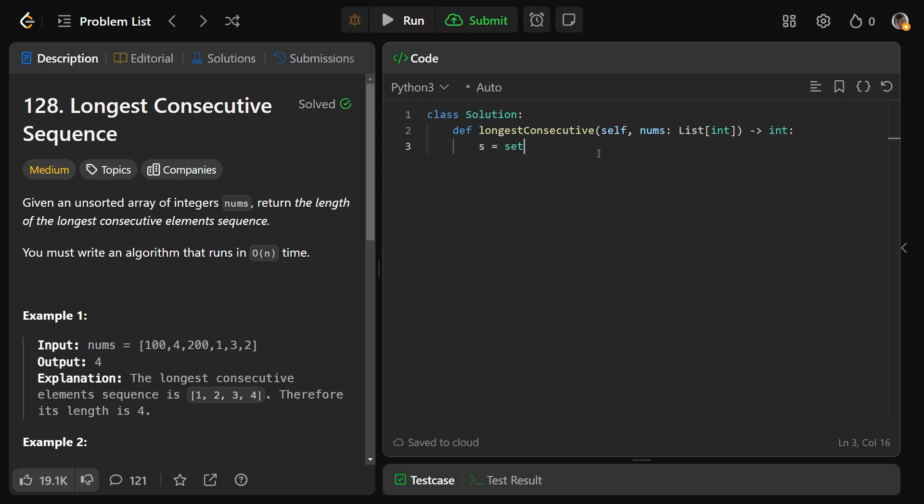So we're just going to start this off by putting all of the numbers into a hash set, and we can do that with S is the set of nums. We'll get our current longest sequence that we've seen, and we haven't seen anything, so it's going to be 0. And we'll say, for each num in the nums.